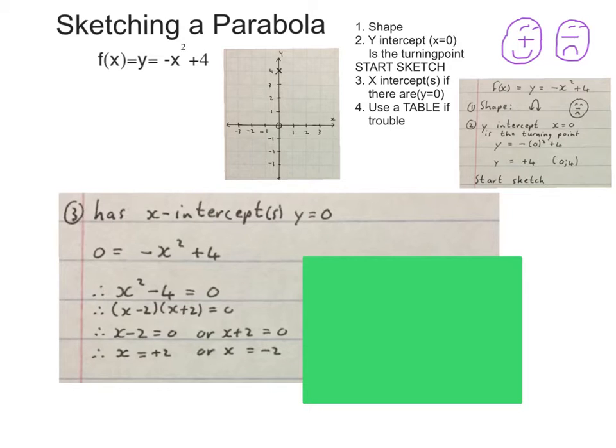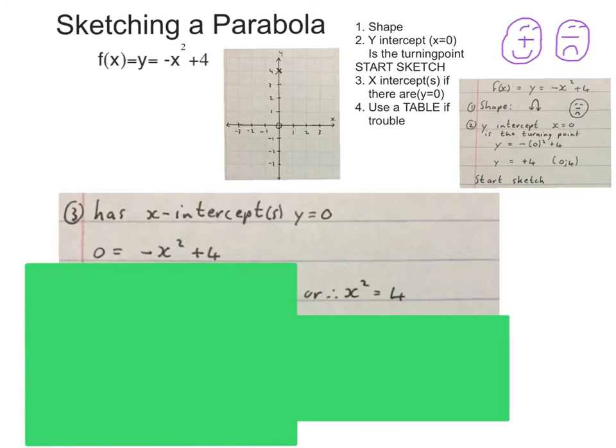But, there is another method. Let's look at that quickly. You can also start with this equation, and take the x-square to one side, and make it positive, and leave the 4 on the other side. And then, you can square root both sides. Which will then look like this. But, most kids forget to put this plus minus in on the right-hand side.